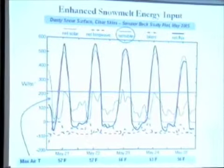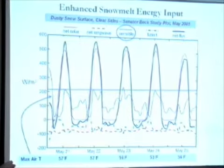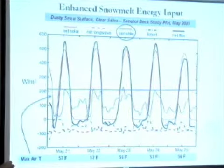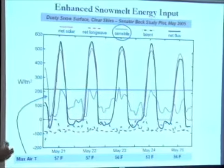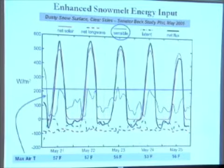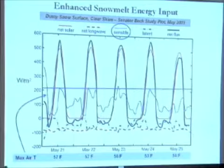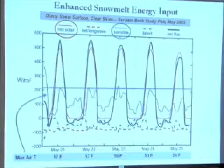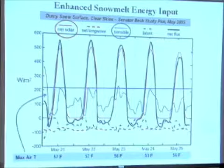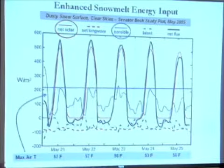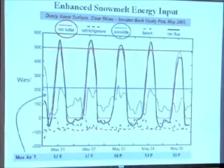Values go down in the evening, with some persistent energy being produced during the night if temperatures stay above freezing, which contributes a little bit to snow melt. Now looking at the net solar — this is the net amount of solar energy being absorbed after some is reflected — these are peaking at upwards of 500 watts.